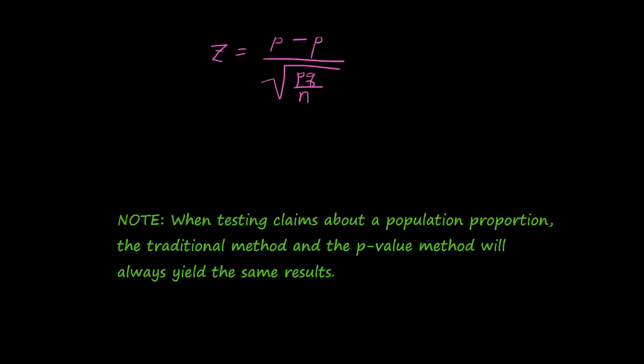And then the p-value method, which is comparing the p-value with alpha. The p-value is associated with the test statistic, the probability associated with that. So there are two ways that we can make our decision. Either one of these ways will agree - these two ways will yield the same results.